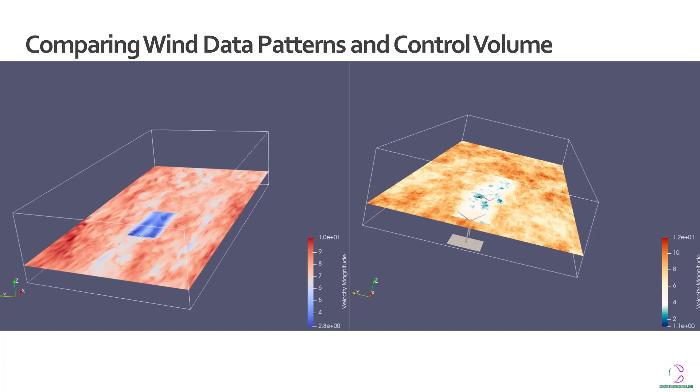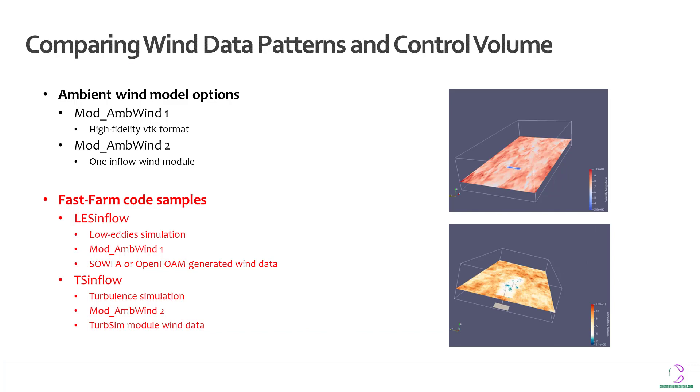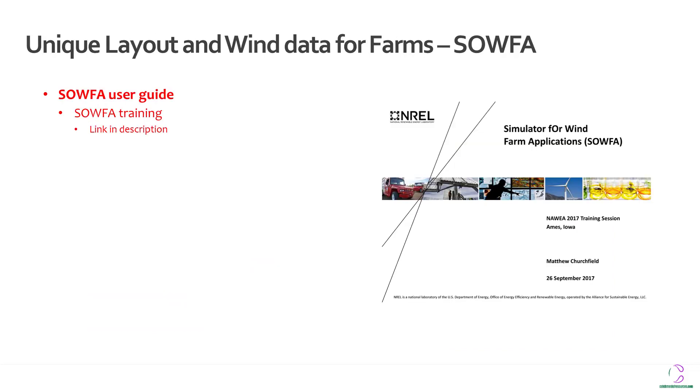So in order to generate, because you can see that this control volume actually looks small but you actually need much larger. Let's say you want to have 20 wind turbines. You need much larger than what OpenFast actually provides. So you actually need to generate your own wind data with different dimensions. In order for that to be done, you need SOWFA. So you can see there is a tutorial online of how to use SOWFA which has been linked in the description. This is a picture of what the cover looks like.